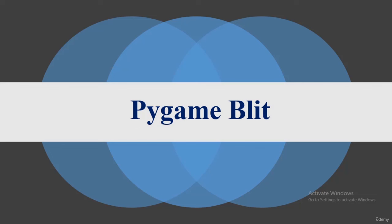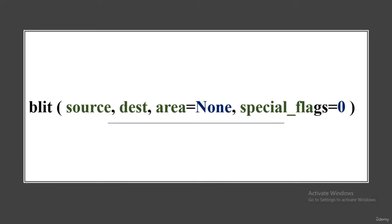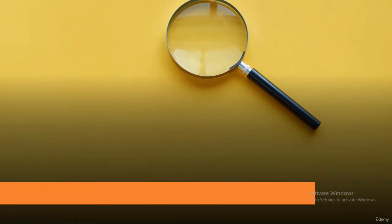The next concept is Pygame blit. Blitting is the process of rendering game objects onto a surface. When you create a game object, you need to render it. If you don't render game objects and run the program, it will give a black window as output. Blitting is one of the slowest operations in any game, so be careful not to blit too much onto the screen every frame. The primary function is blit(), accepting parameters: source, destination, area, and special flag.